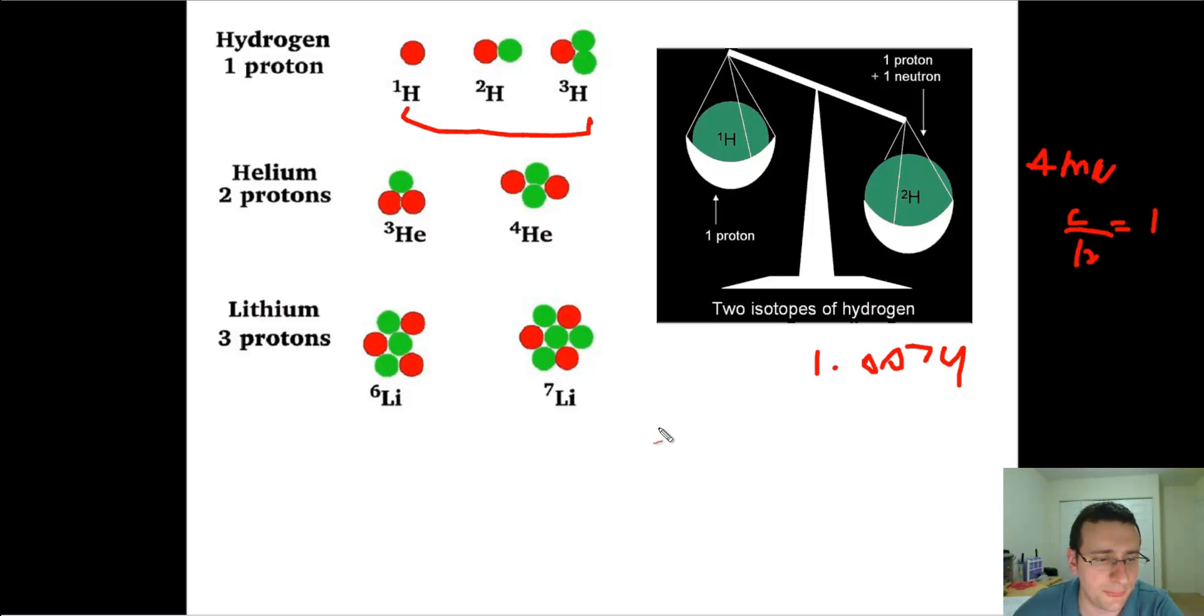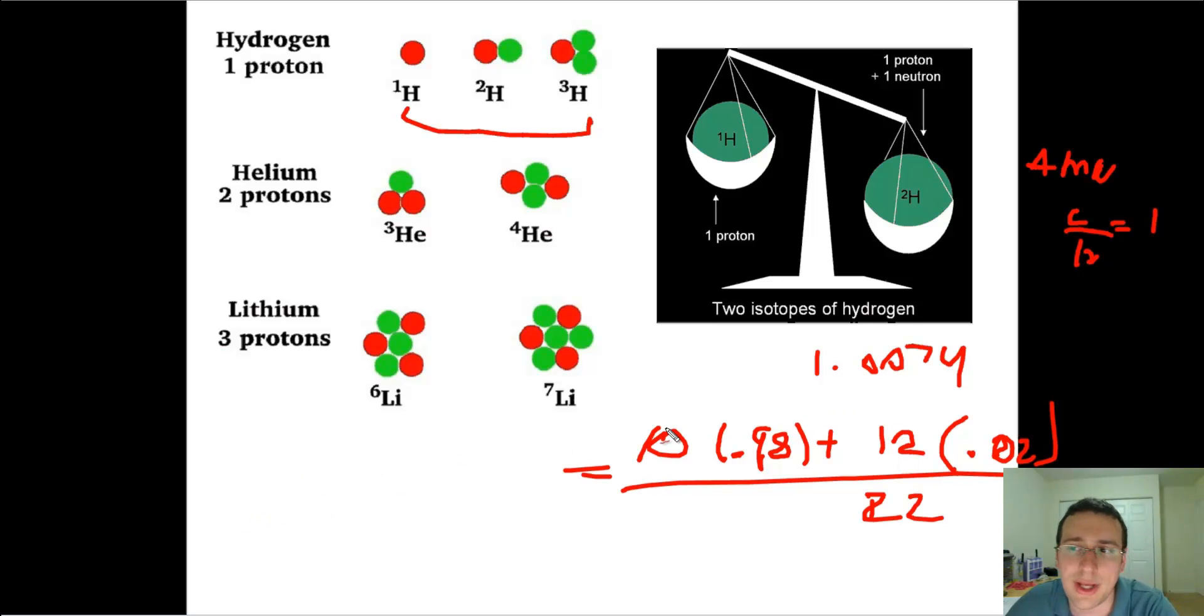You're going to multiply that by how common this isotope is in nature. Say it's 98% common in nature. And you're going to add to this the mass of the second isotope, say 12, because it has 2 extra neutrons. And you're going to write down how common it is in nature, say 0.02. Then you divide that by the total. In this case, it's going to be 22. And this is what's going to determine your actual mass number. What you did here is you did a weighted average. Because the isotope 10 is more common in nature, it should count more than the one that's less common in nature.